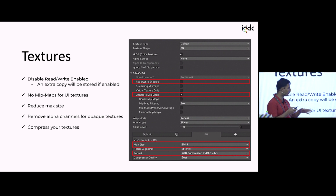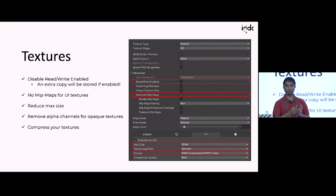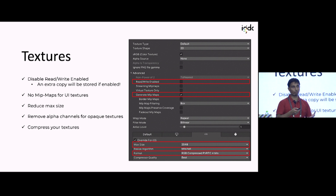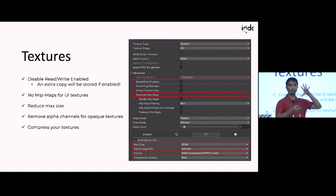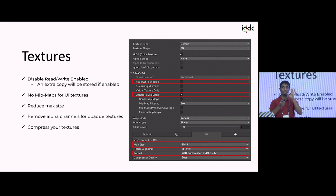Mipmaps are like thumbnails for images — Unity generates smaller and smaller copies internally if you select that checkbox. It's very useful when you can zoom the camera in and out, like in Farmville: when you zoom out it uses smaller images for less detail, and when you zoom in it uses the larger ones for more texture detail on your assets.